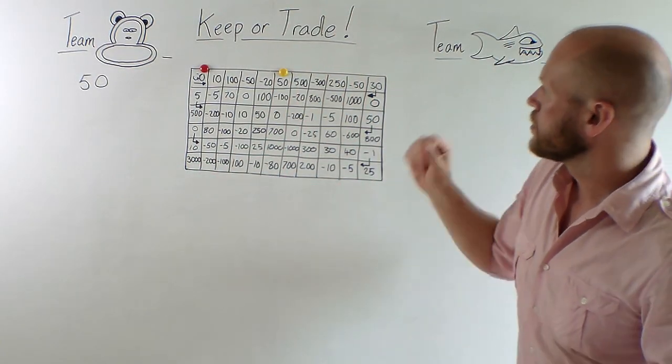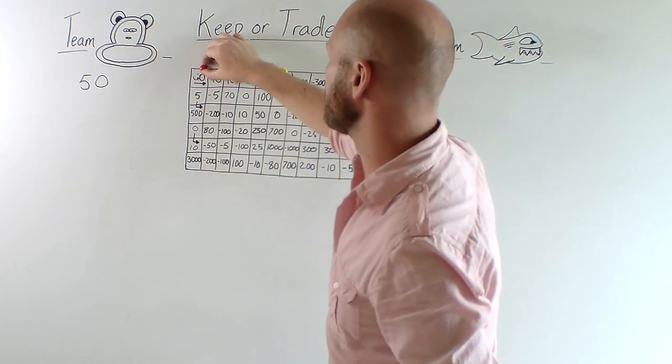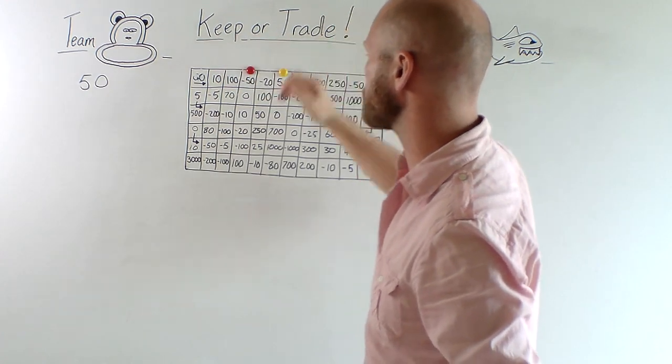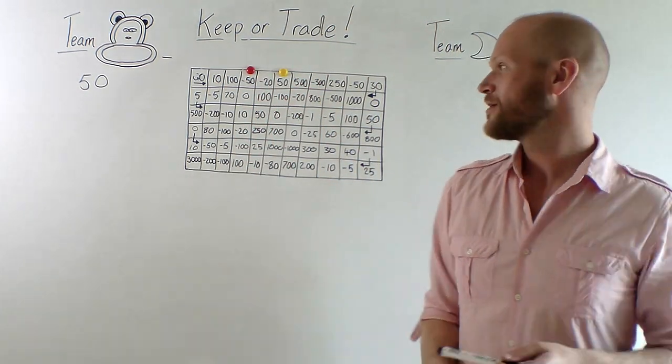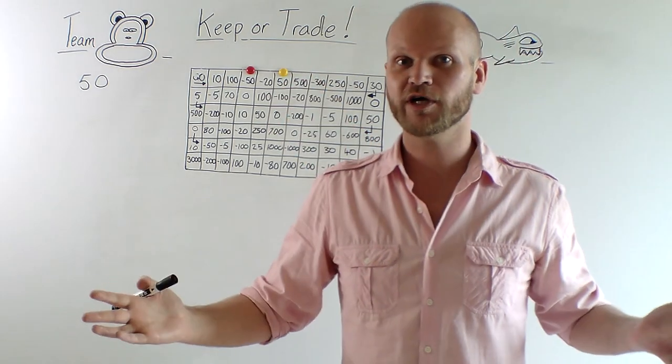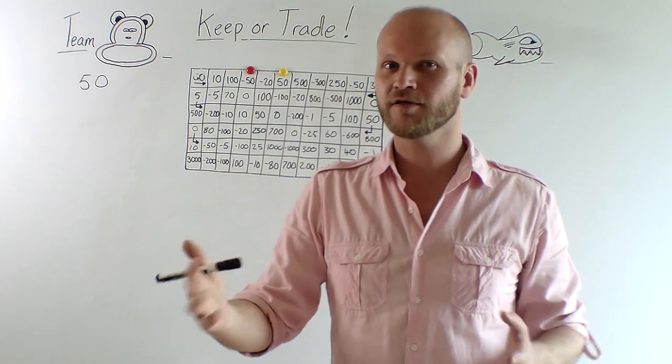Team Shark throws the dice, throws a 3. 1, 2, 3. So, minus 50, bye-bye 50. Keep or trade? They say, oh, okay, we'll trade.